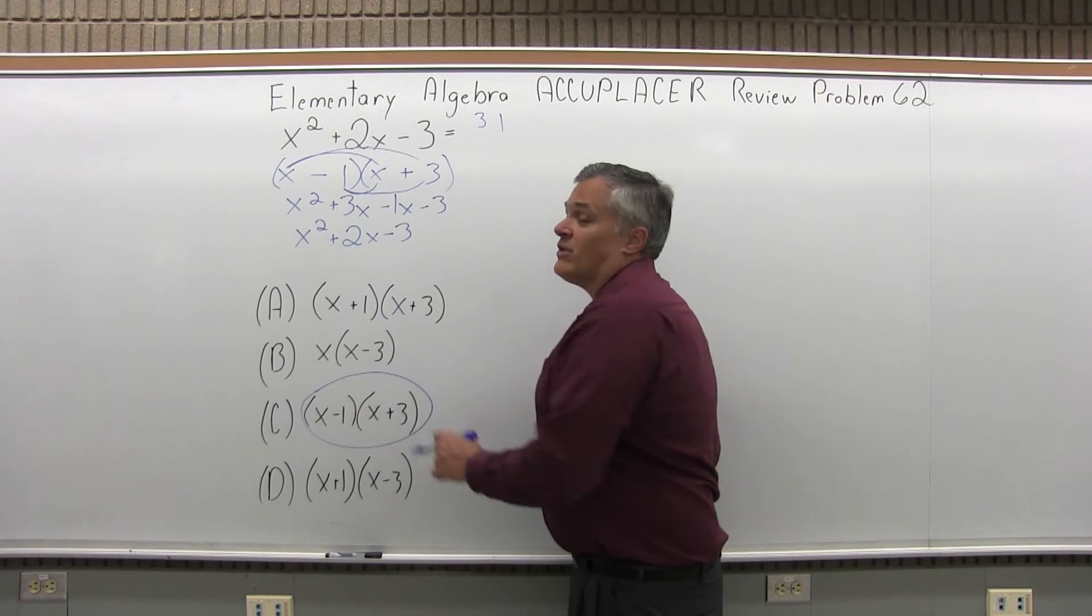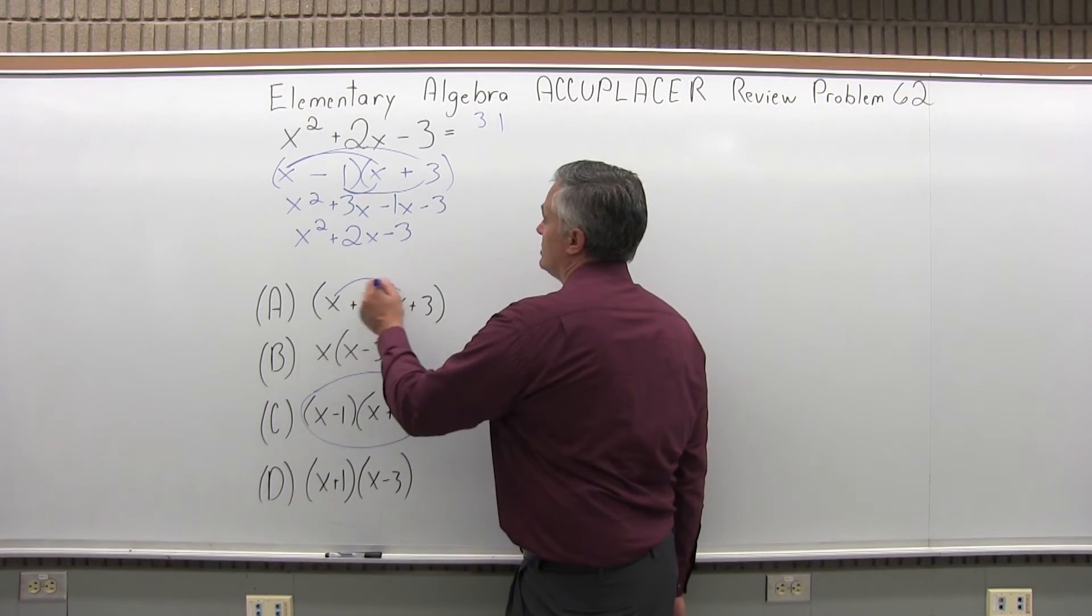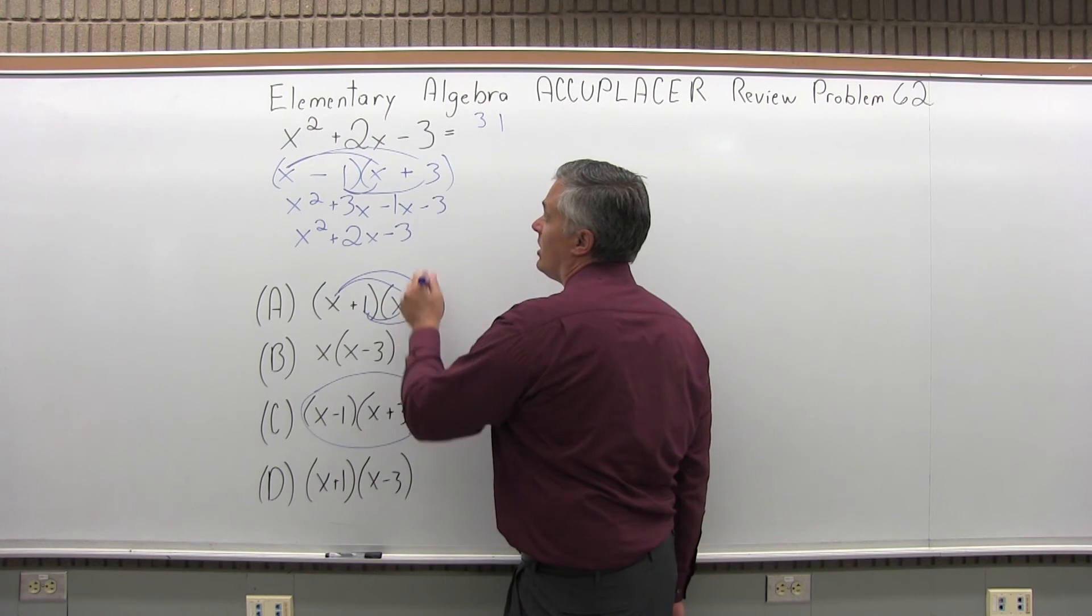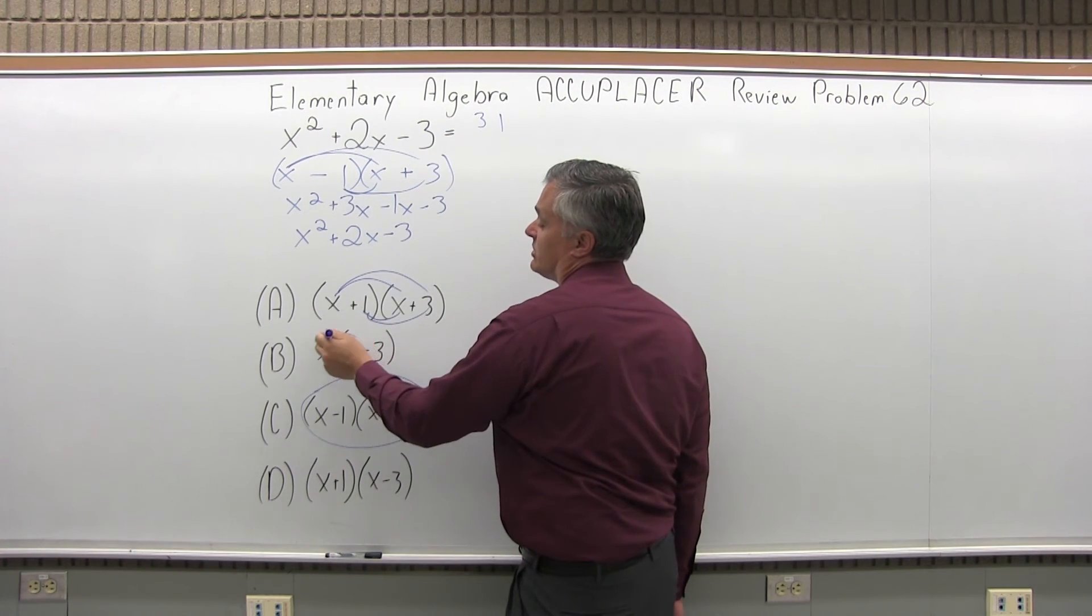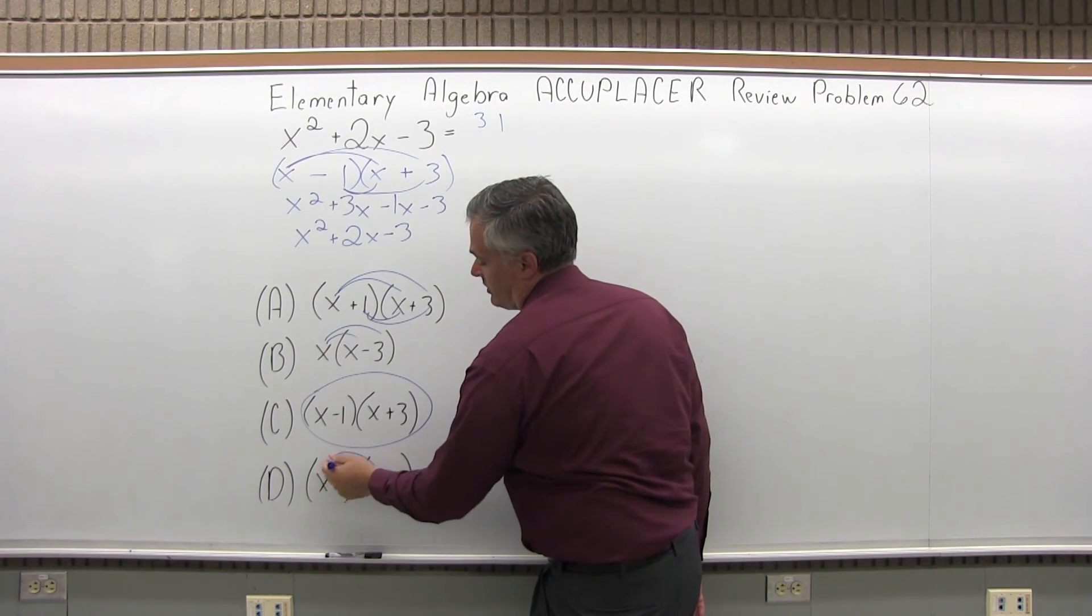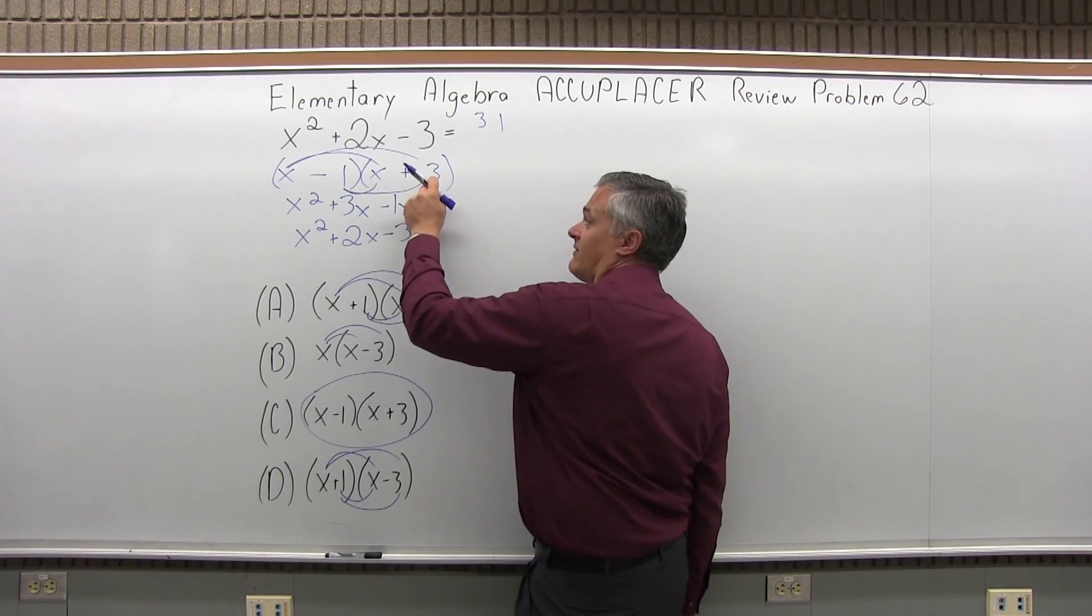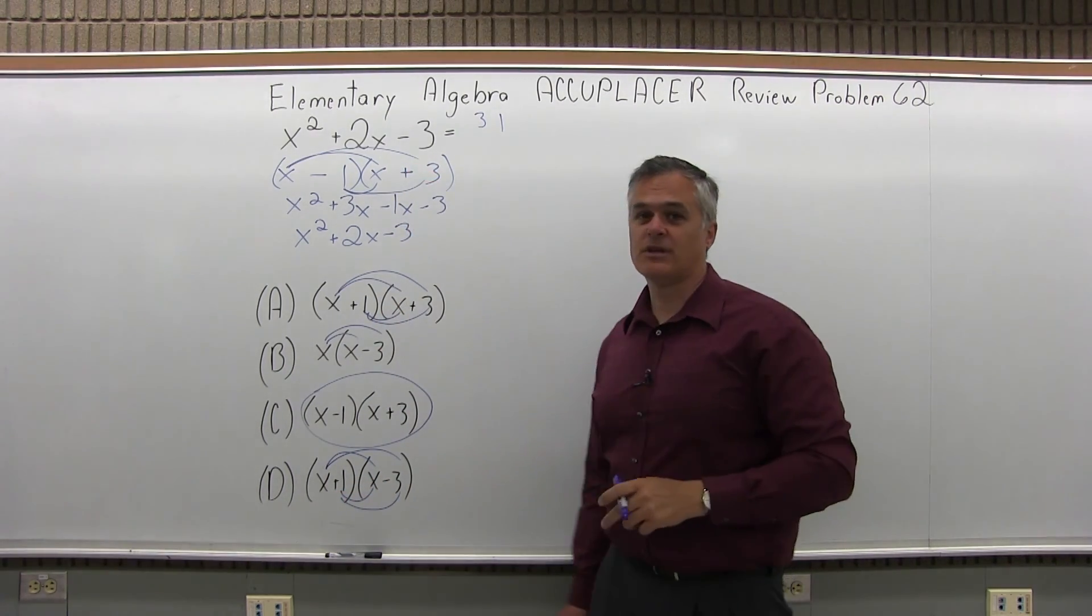And where we have an untimed test with the Accuplacer, you could just multiply out each one and see which one is going to give you the original question. Where there's no time limit, that's okay. But it is definitely preferred if you factor it, that's better.